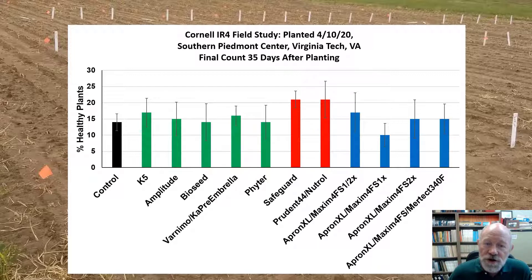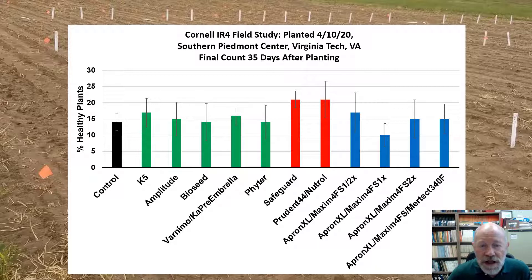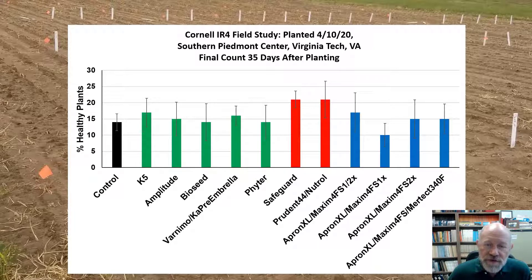This bar chart shows our results from the experiment in Blackstone this past spring. While none of the treatments in the experiment are yet legal for hemp, two of the treatments — the ones with the red bars — appeared to perform better than the others. This may be some of the first research results showing that some treatments actually work for hemp disease control, at least partially.